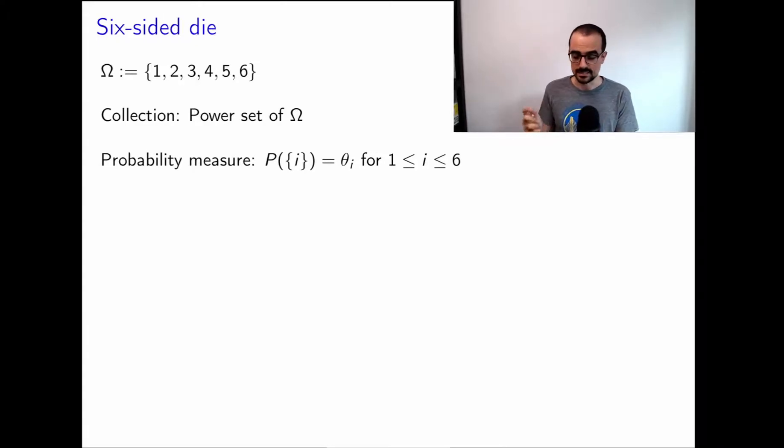I actually wanted to have the die here, but I don't know where it is. The house is a disaster as usual, but I will show you the die eventually. Anyways, so we have a six-sided die. The outcomes are 1, 2, 3, 4, 5, 6, as usual. The collection of possible events is every possible union or intersection, so it's just the power set. Now we want to estimate the probability measure.